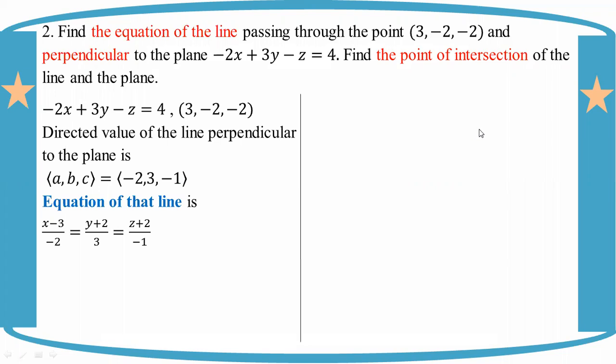x equal to x1 plus kl, y equal to y1 plus km, z equal to z1 plus kn. Using the derived value lmn which is abc, minus 2, 3, minus 1, with parameter k.